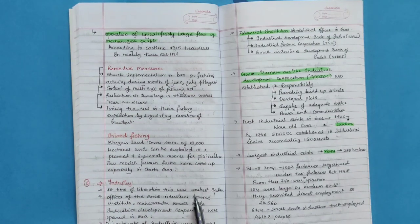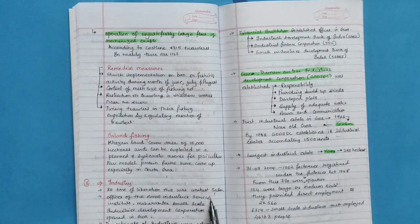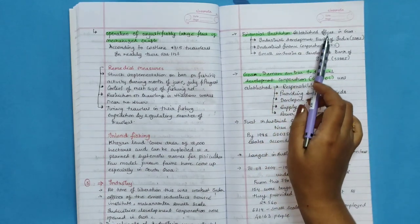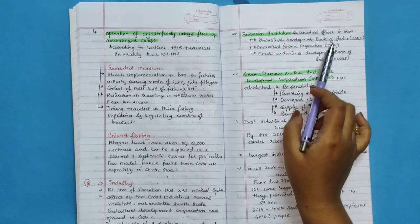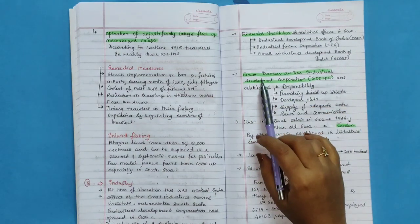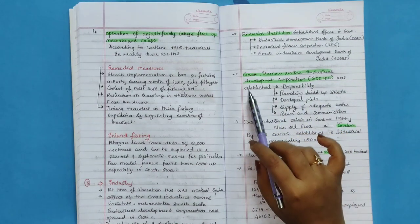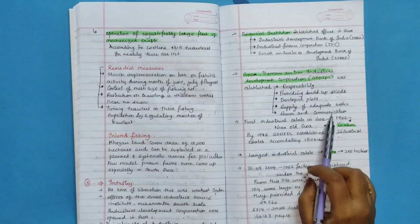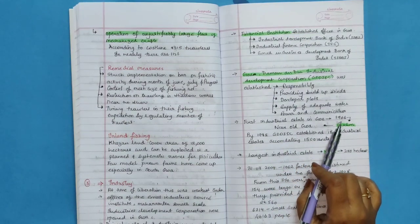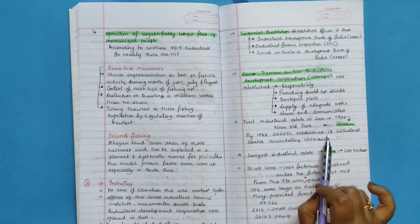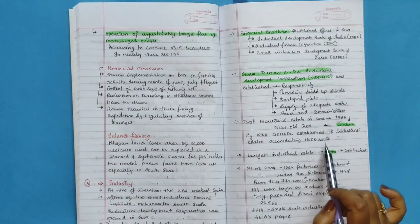Industry. At time of liberation, this was the weakest sector. Offices of the Small Industries Service Institute, Maharashtra Small Scale Industry Development Corporation were opened in Goa. Directorate of industries were activated. Financial institutions established offices in Goa. Industrial Development Bank of India, Industrial Finance Corporation, Small Industries Development Bank of India. Goa Daman and Diu Industrial Development Corporation was established. The responsibility was providing build-up sheds, developed plots, supply of adequate water, power, and communication. First industrial estate in Goa was 1966 at Corlim, near Old Goa. By 1998, GSIDC established 18 industrial estates, accommodating 1,500 units.